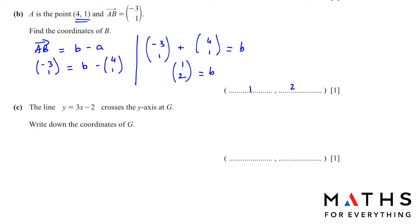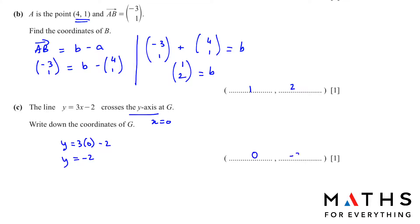Part c: the line y = 3x - 2 crosses the y-axis at G. Write down the coordinates of G. When the line crosses the y-axis, x = 0. Substituting x = 0, you get y = -2. So the coordinate is (0, -2).